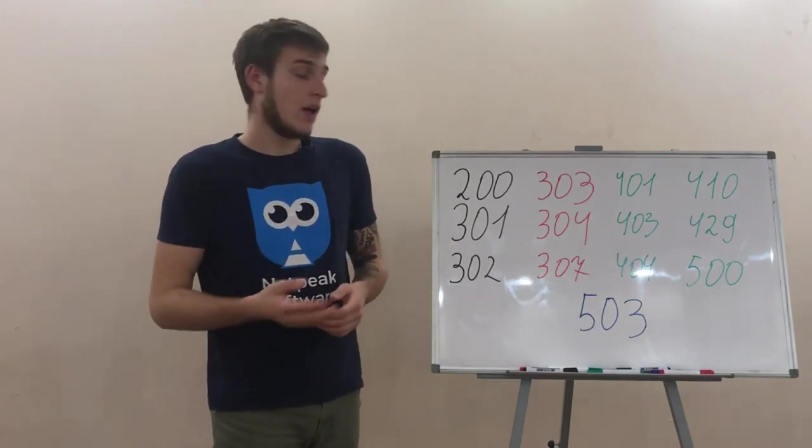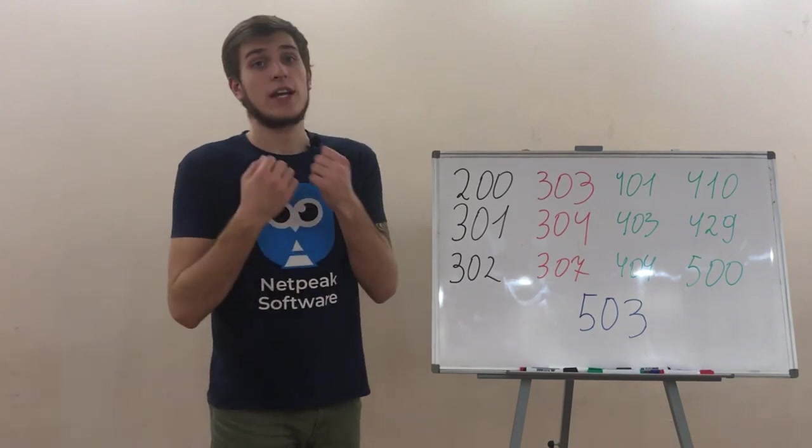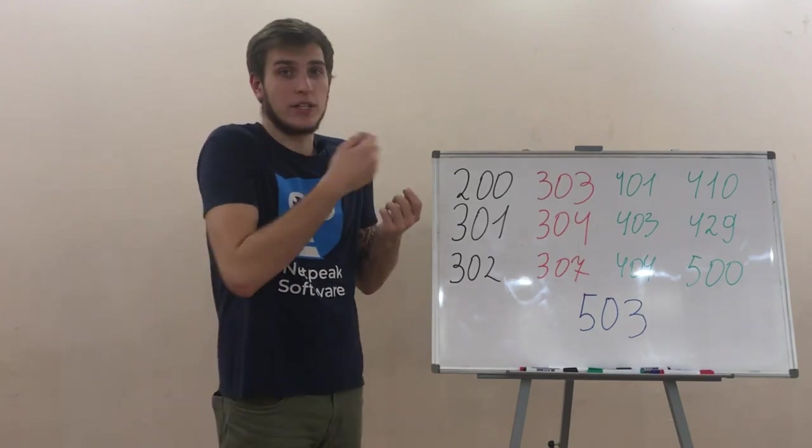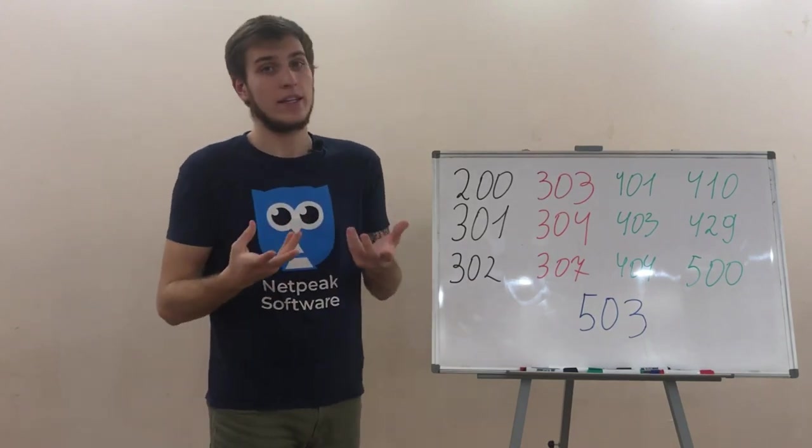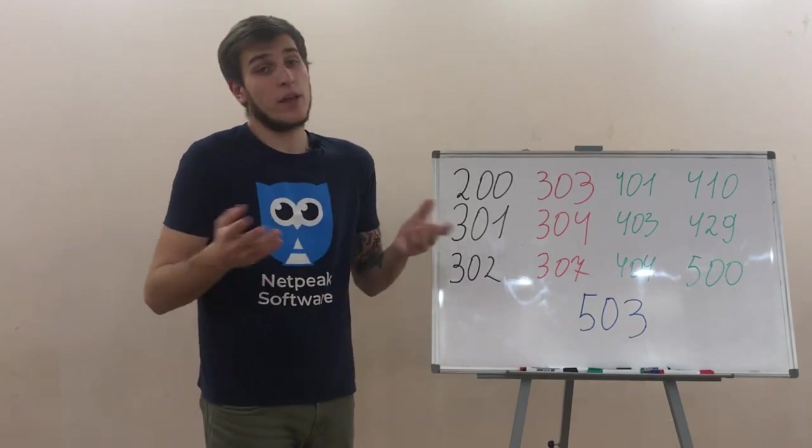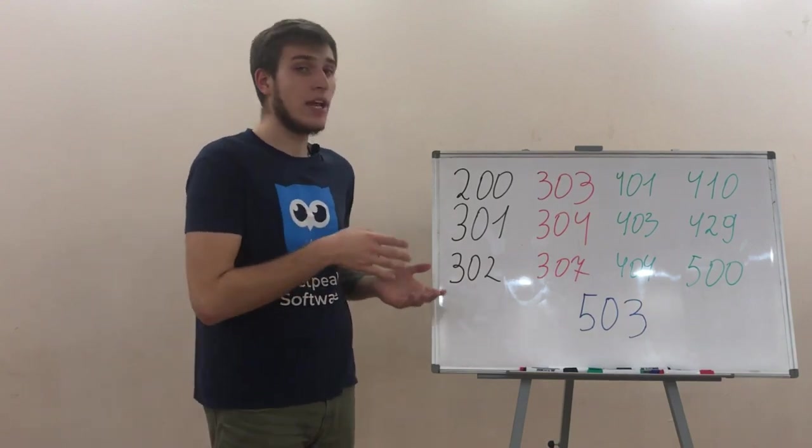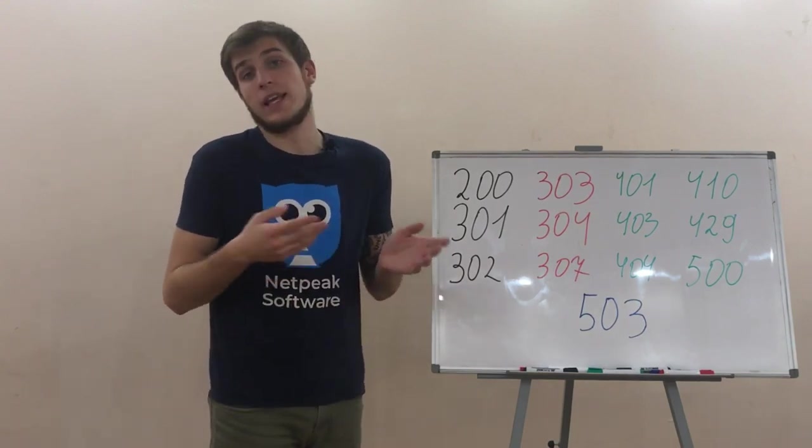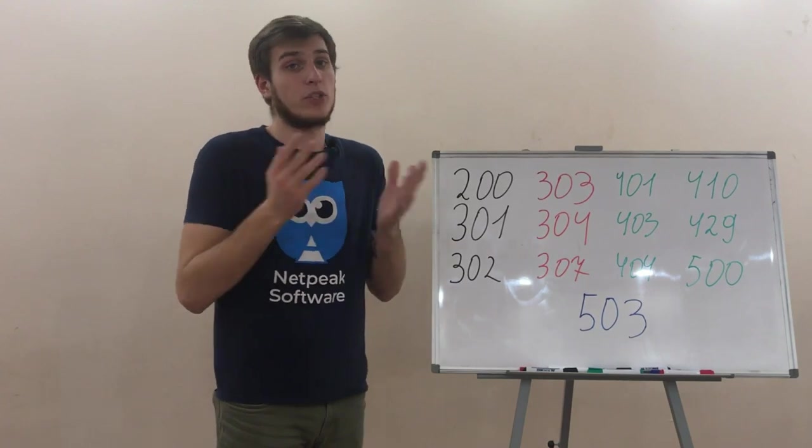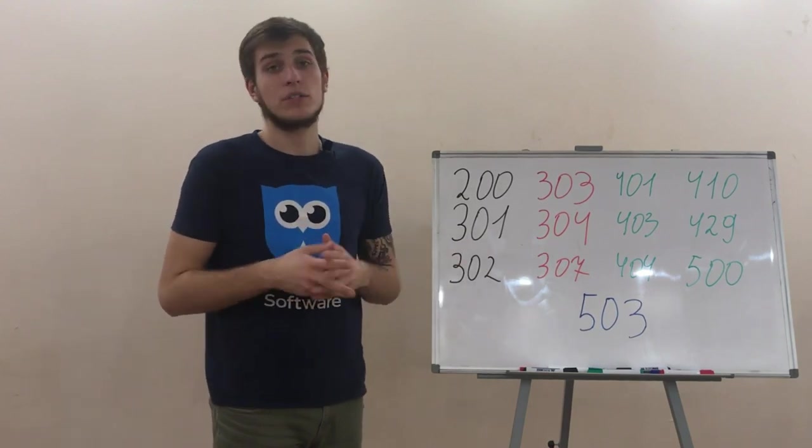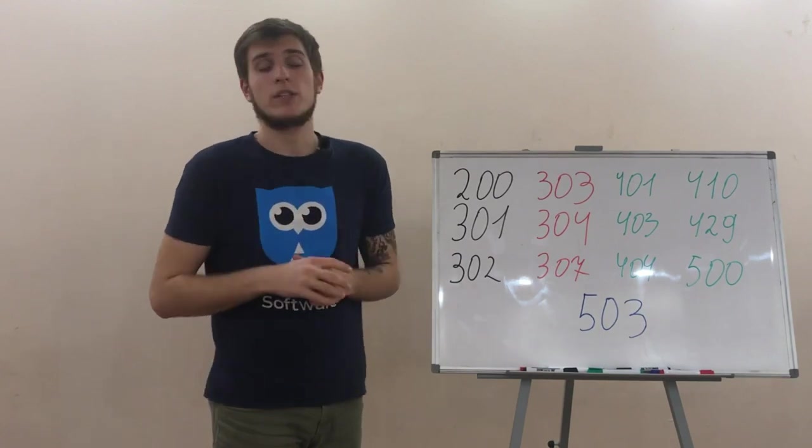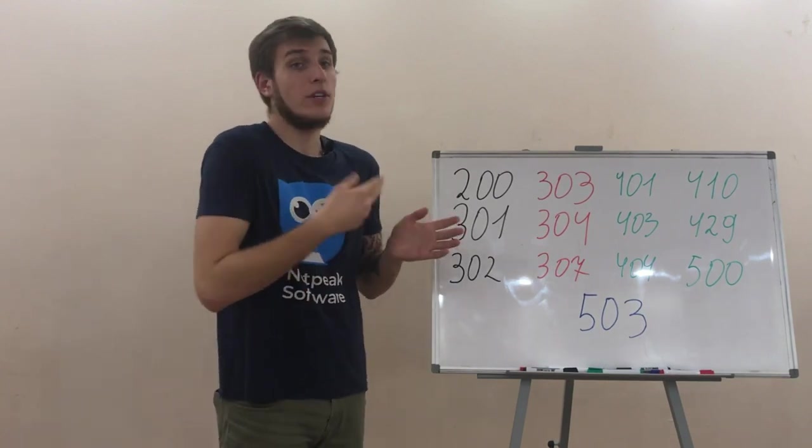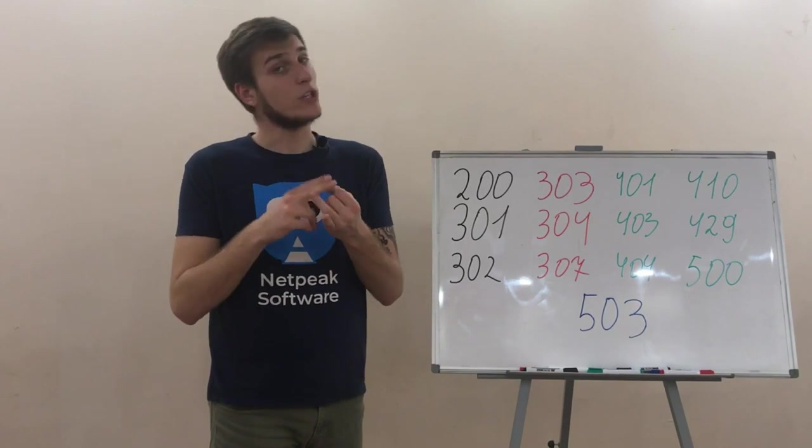302 Found. This code tells you that the page has been found and is temporarily located in another place. Search engines usually do not delete them from the index as they may work again. Previously, this code was used in cases like website development or redesign or when the goods are out of stock but pages still get traffic. So, it's reasonable to lead the visitors to another places like catalogs or similar pages.